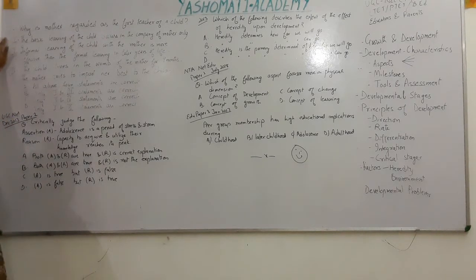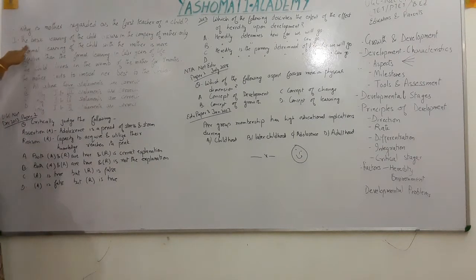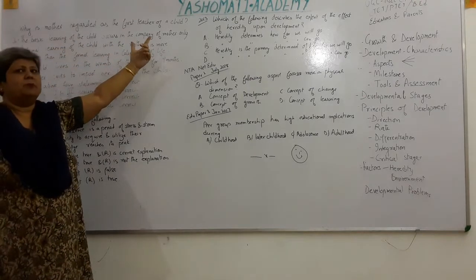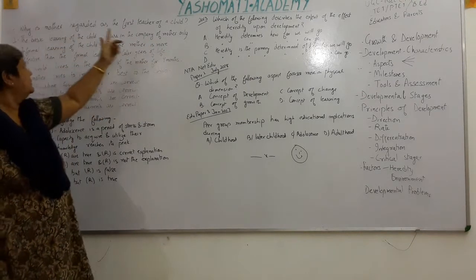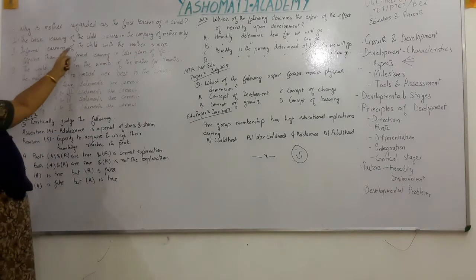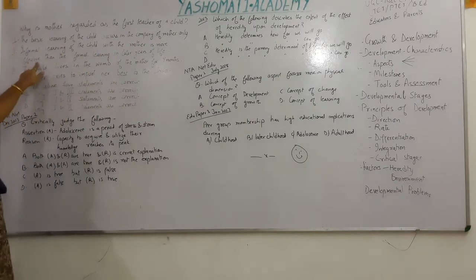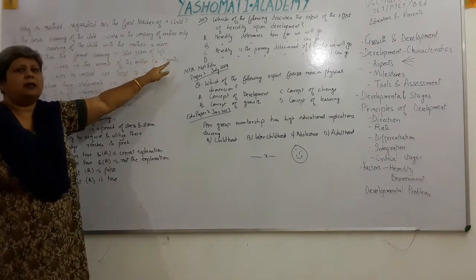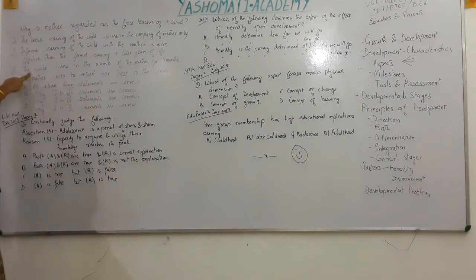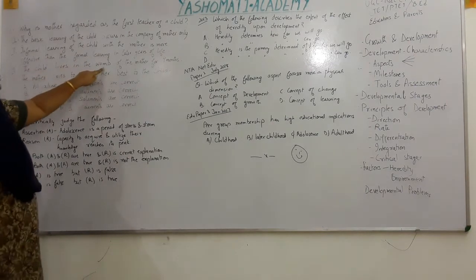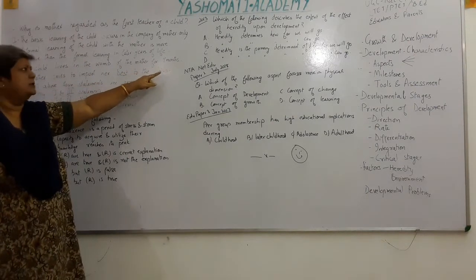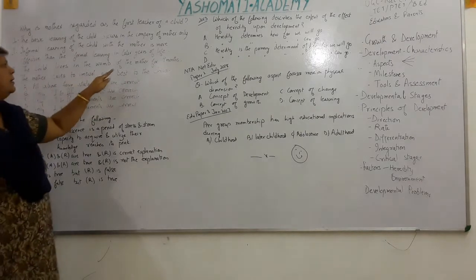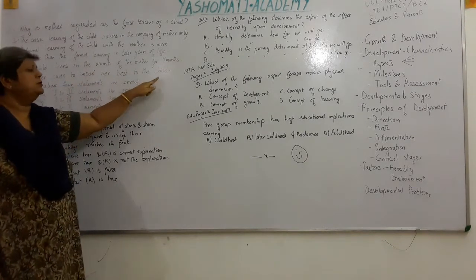Question: Why is mother regarded as the first teacher of the child? Options: (A) The basic learning of the child occurs in the company of mother only. (B) Informal learning of the child with the mother is more effective than formal learning in the later years of life. (C) The child lives in the womb of the mother for 9 months. (D) A mother tries to impart her best to the child.